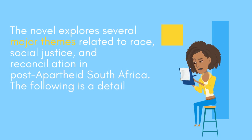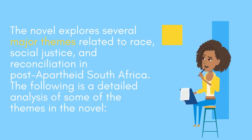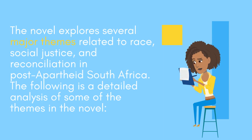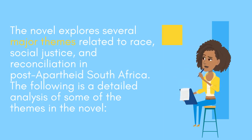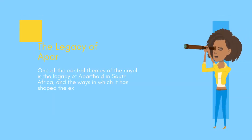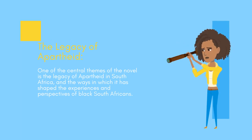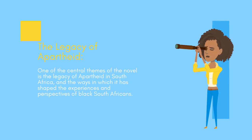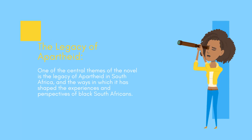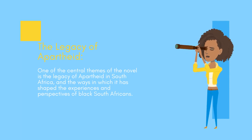The novel explores several major themes related to race, social justice, and reconciliation in post-apartheid South Africa. The following is a detailed analysis of some of the themes in the novel. One of the central themes is the legacy of apartheid in South Africa, and the ways in which it has shaped the experiences and perspectives of black South Africans.